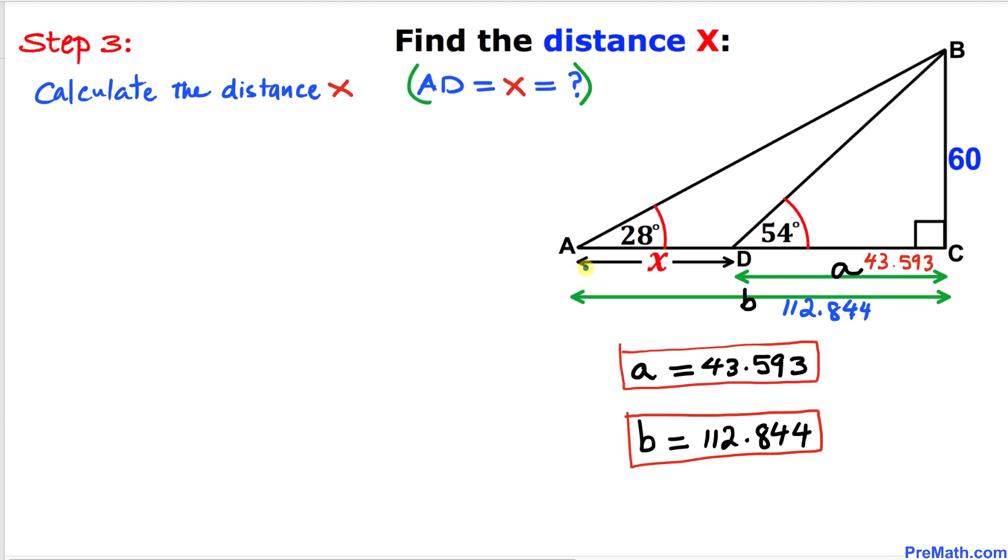Here's our final step. We are going to calculate the distance X. We can see the distance X is simply the distance b minus the distance a. Here I wrote X equals b minus a.